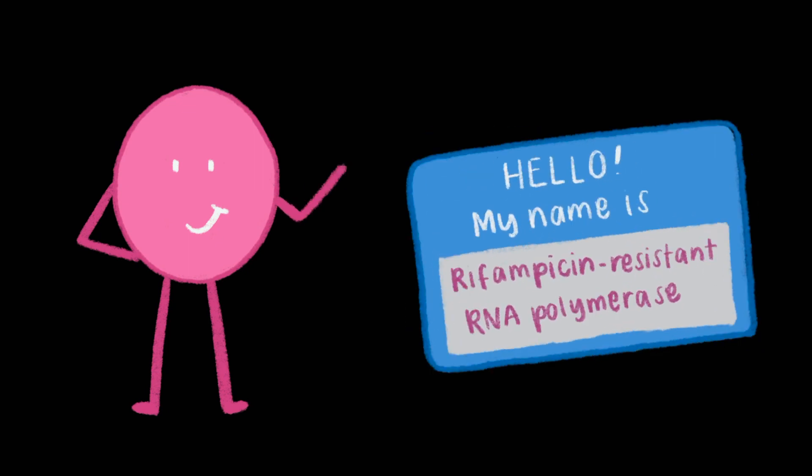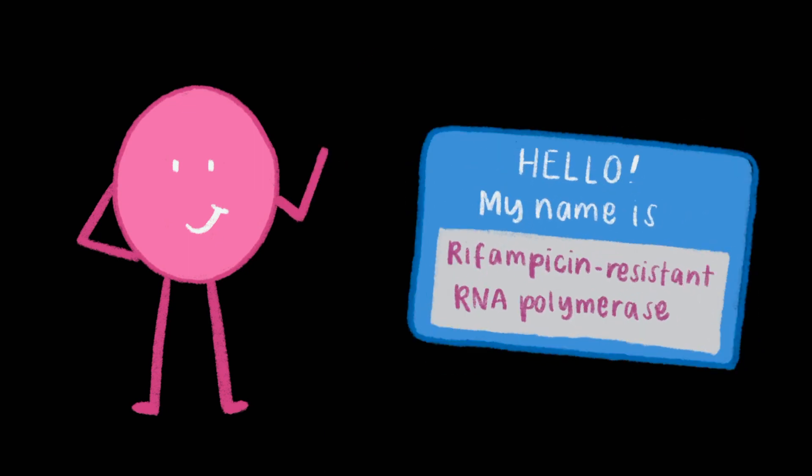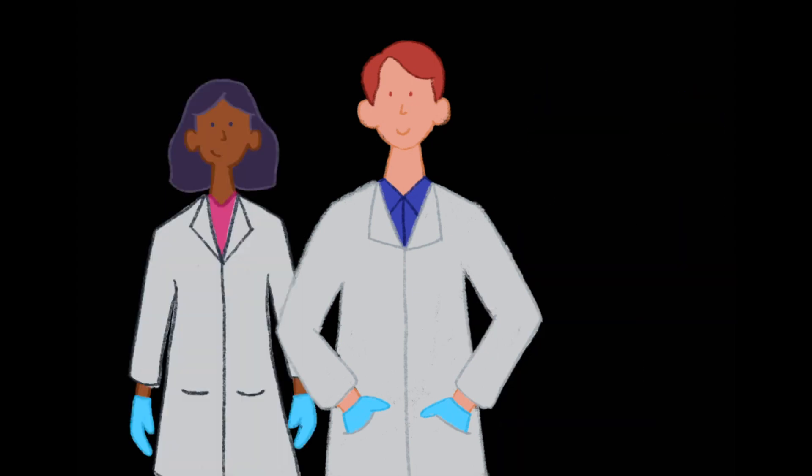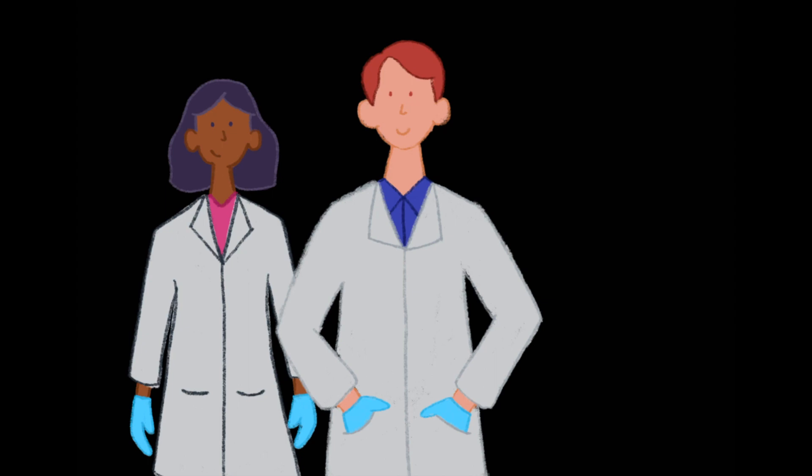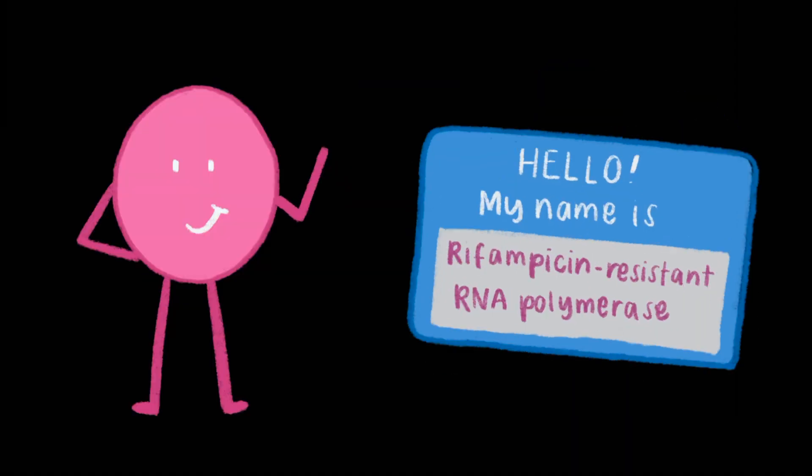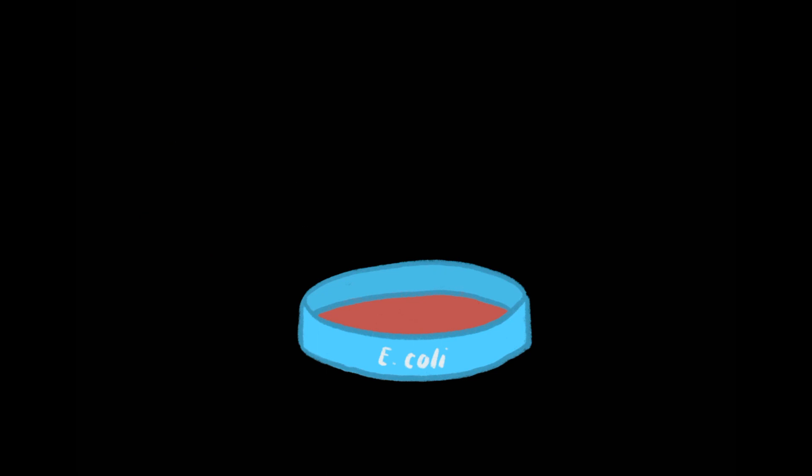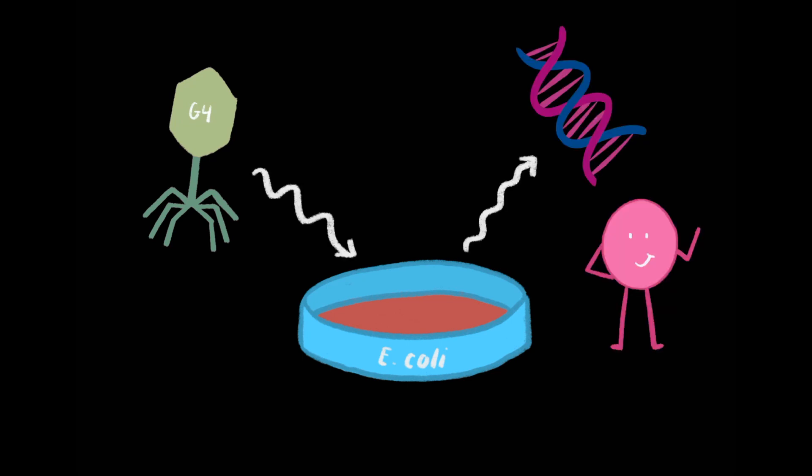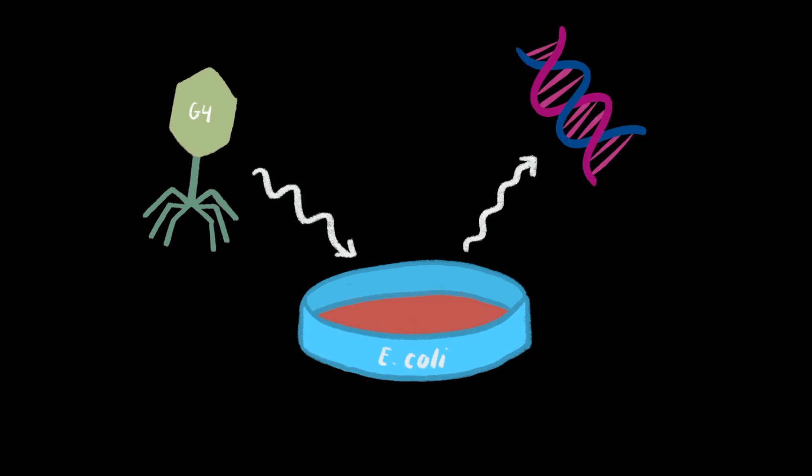Besides, the researchers weren't quite satisfied enough with their findings, so they put their lab coat back on and went into the lab to study this rifampicin-resistant RNA polymerase again. They infected their E. coli with heaps of phage G4, grabbed the lot, and extracted their DNA. They also purified their rifampicin-resistant RNA polymerase from the cells to test for its activity.